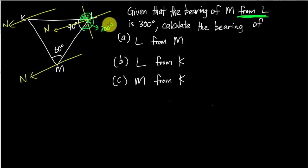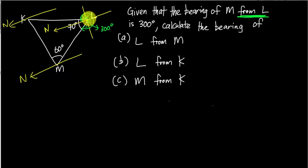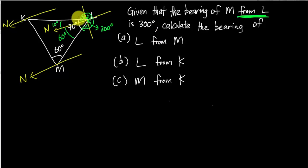The diagram also tells us the triangle has an angle of 70°. Since rotating from the north of L to LM is 300°, I know the remaining angle from north to that side is 60° — because one full circle is 360°, and 360° minus 300° = 60°. So if here is 70° and I know this part is 60°, the remaining small angle is 70° minus 60° = 10°.